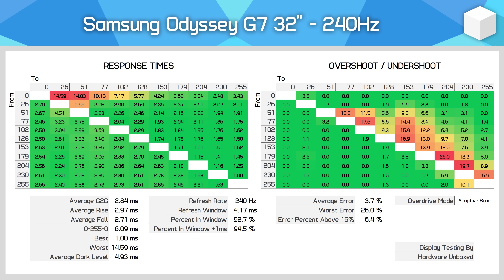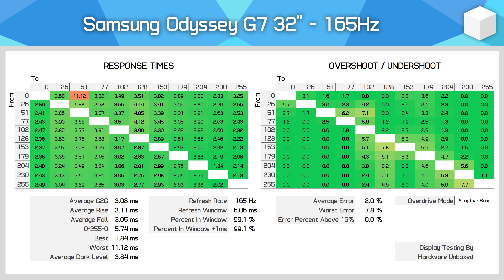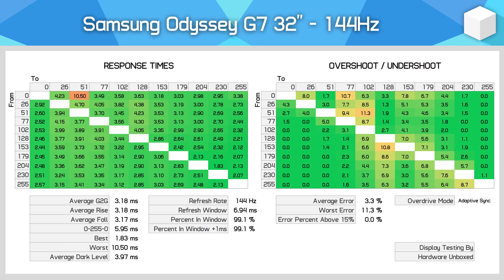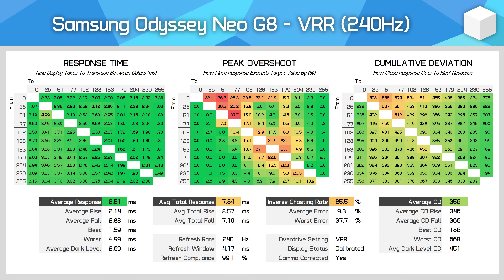This monitor is the Samsung Odyssey G7, which was released in 2020 and does not use a G-Sync module, but does use Variable Overdrive. Its successor, the Odyssey Neo G8, also uses Variable Overdrive.